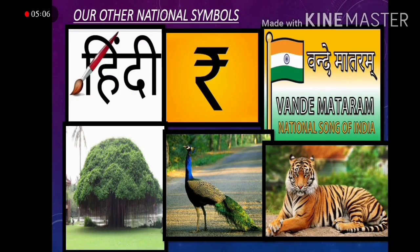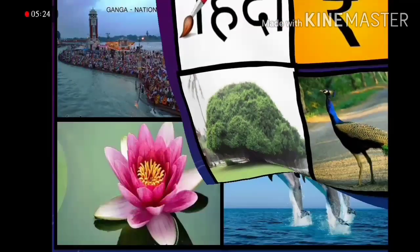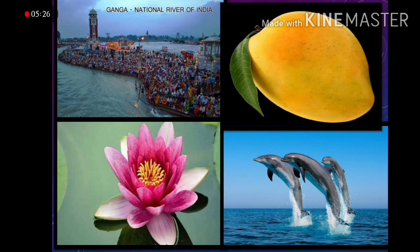Our other national symbols: Hindi is our national language, the Rupee is the currency of India, Vande Mataram is the national song, the Tiger is our national animal, the Peacock is our national bird, and the Banyan tree is our national tree. The Ganga is our national river, the Mango is our national fruit, the Dolphin is our national aquatic animal, and the Lotus is our national flower.